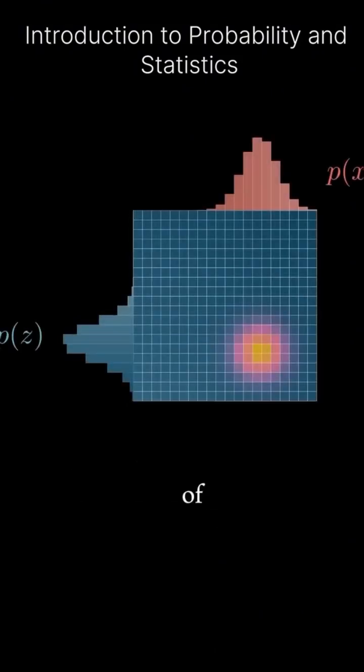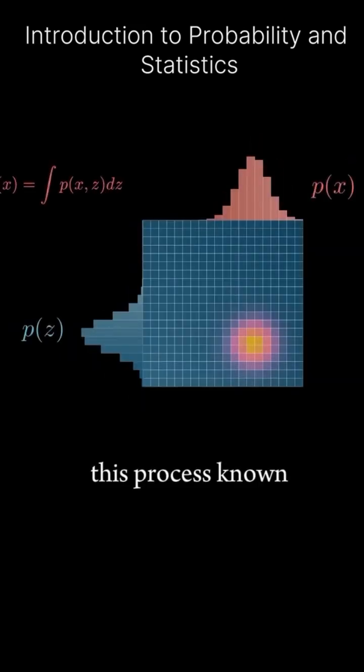An interesting property of the joint distribution is that we can use it to compute each of the marginal distributions. This process, known as marginalization, involves integrating the joint distribution with respect to the other variable.